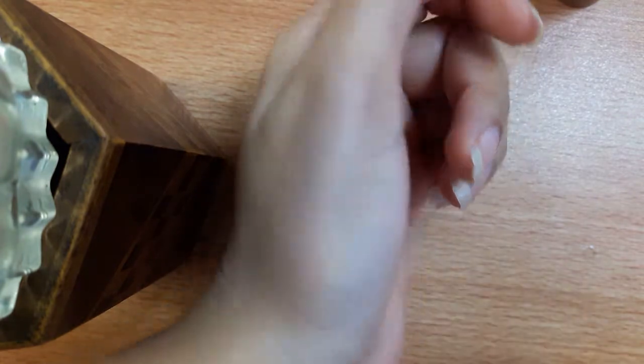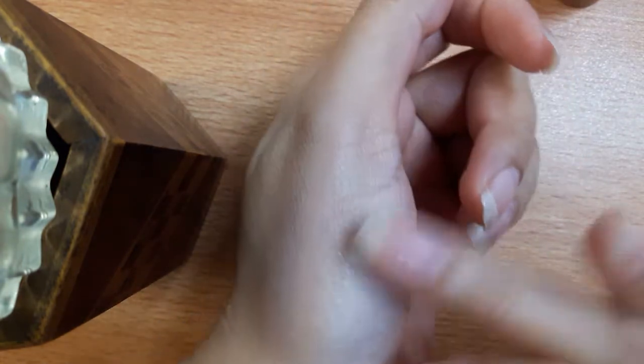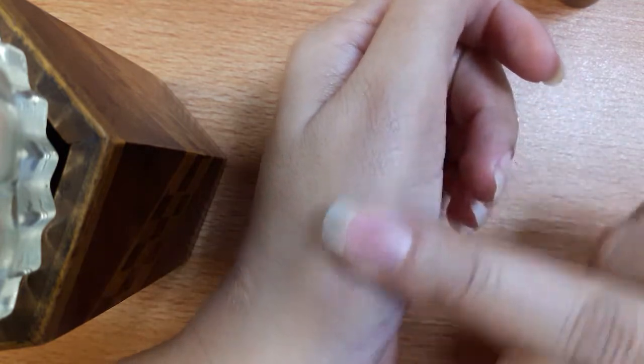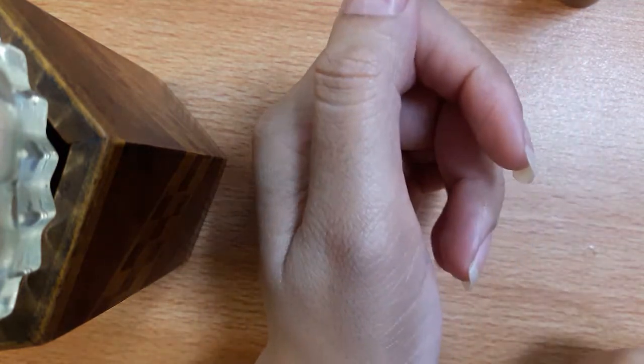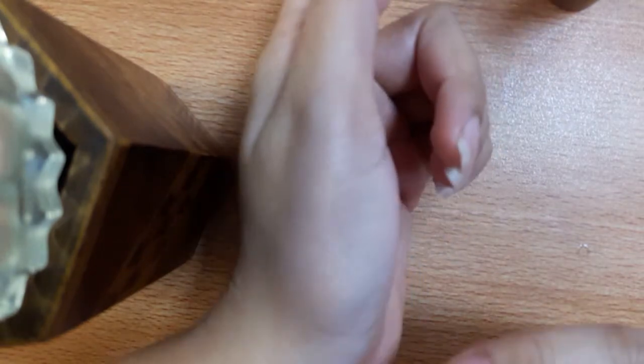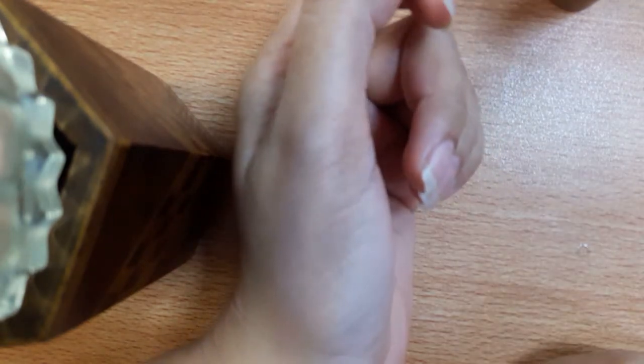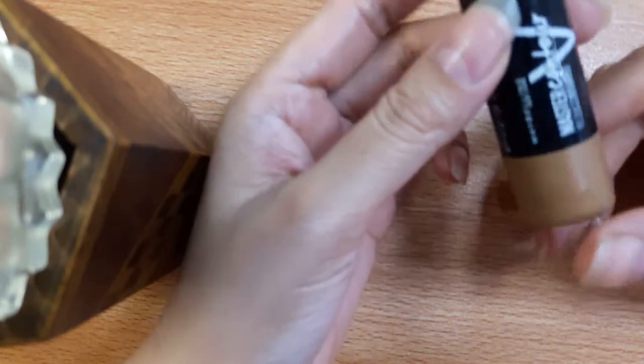This is a highlighter. This is a creamy matte texture. It has a matte texture. And you can blend it smoothly with your beauty blender or brush. But I usually blend it with your fingers. This is the most easy blending.